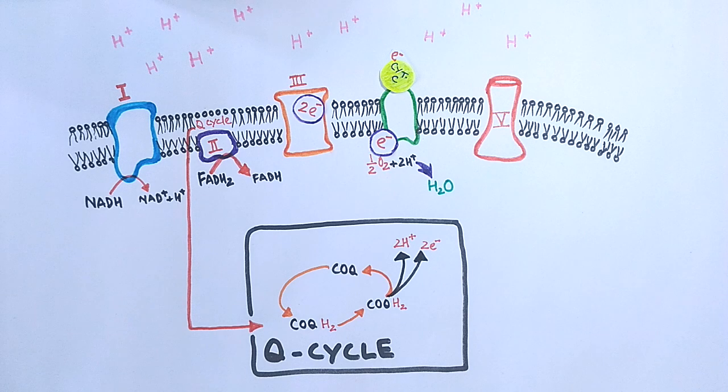So to halt or inhibit the electron transport chain, we should disrupt the electron transport chain components so that electron transport is halted. There are four complex molecules which need to be targeted so that ETC is inhibited.